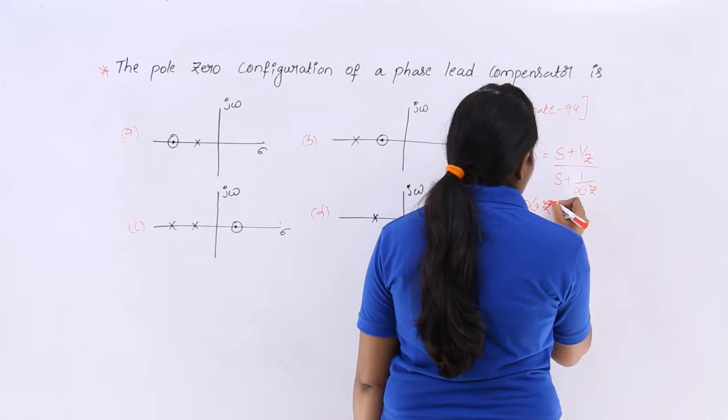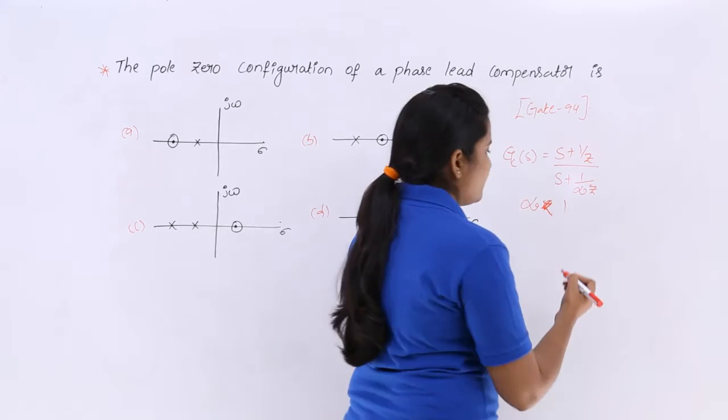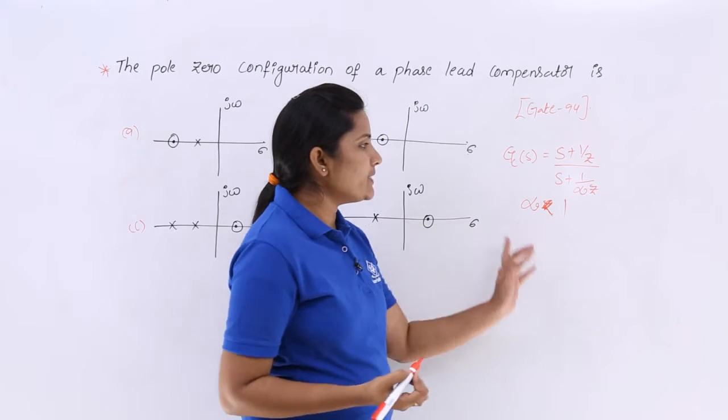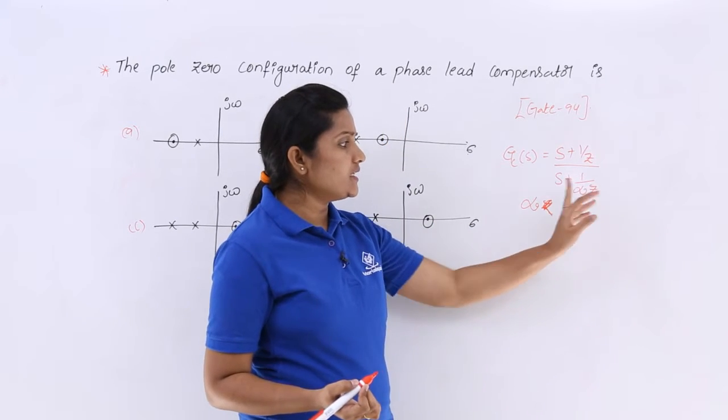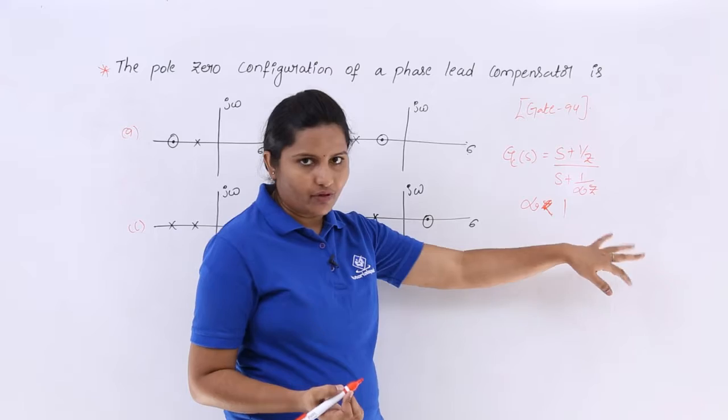Alpha is not greater than 1, alpha is less than 1. In case of lag compensator, you will get beta Z and that beta is greater than 1.